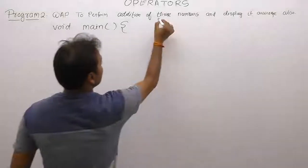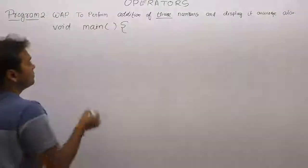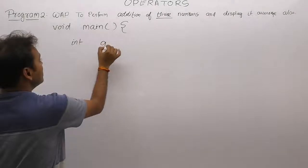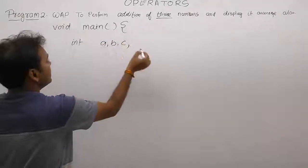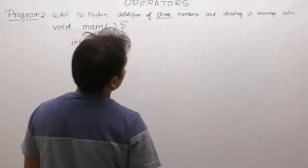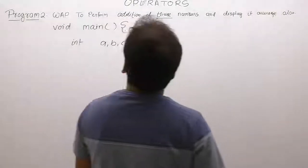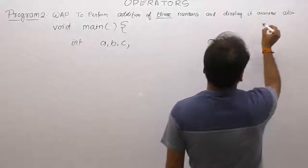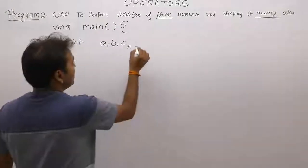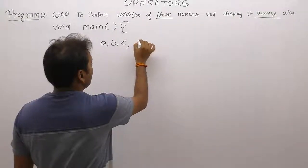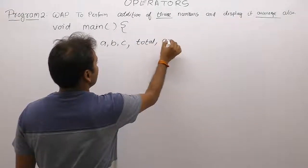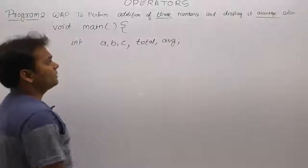There are three inputs from the keyboard — integer variables a, b, and c. For the output, we perform addition and also calculate the average. Therefore, two variables are required to store the total (sum) and the average. Overall, there are five variables declared.